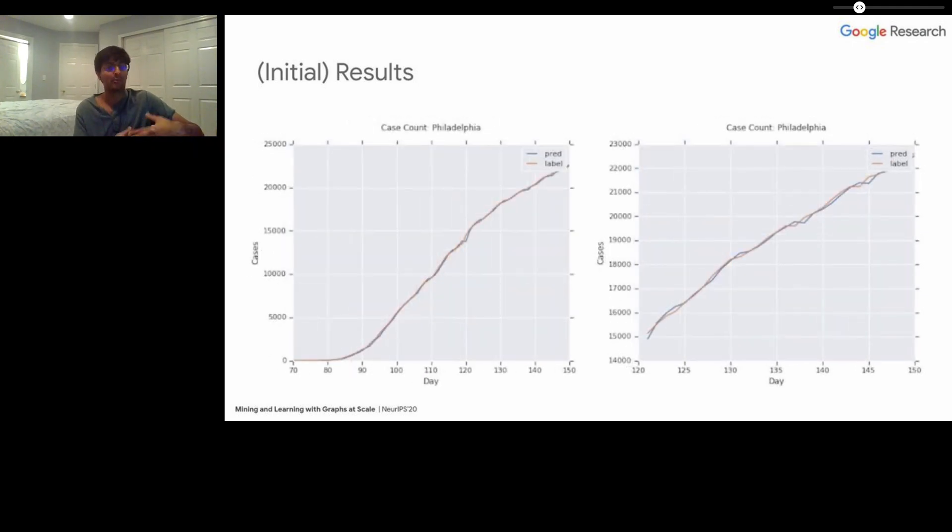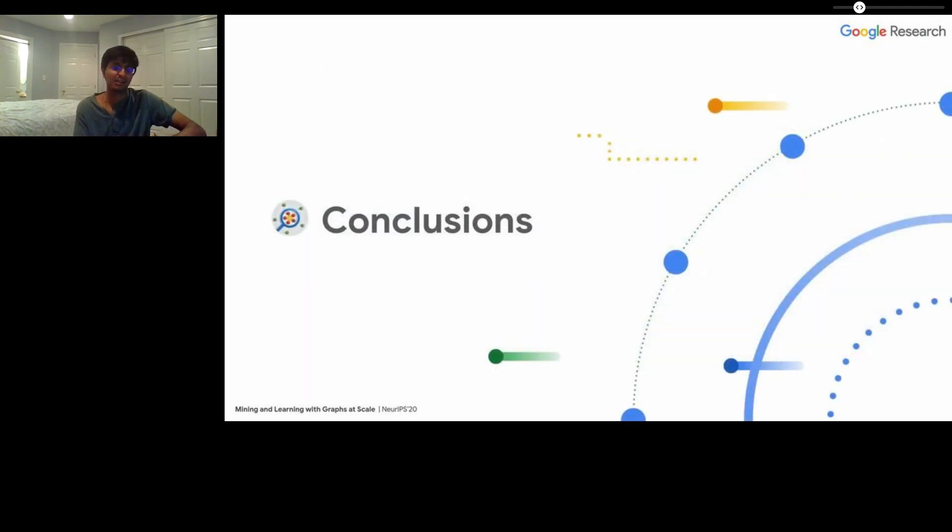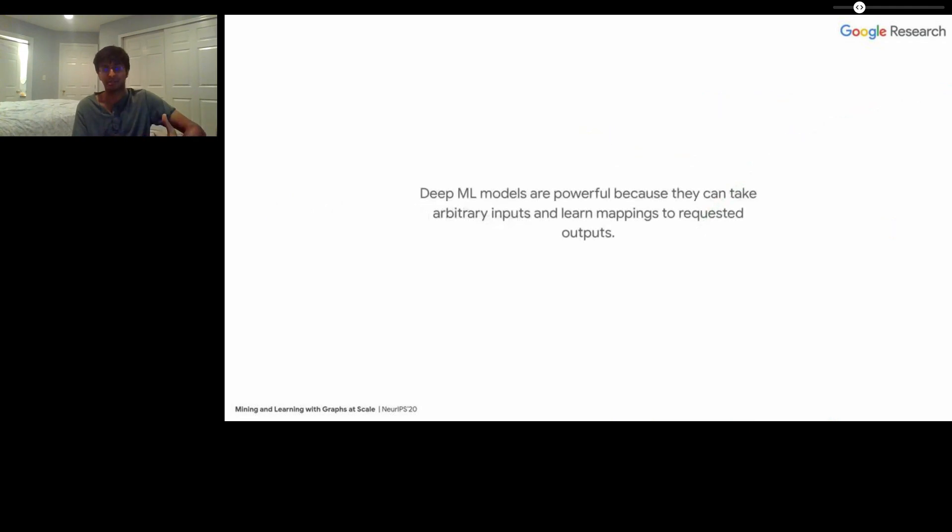I don't have a ton of time - I want to leave time for my other two speakers. Like I said, we'll be coming back to talk about GNNs later in the workshop, but hopefully you found this exciting and engaging. I want to leave with a few conclusions. First, deep ML models are powerful because they can take arbitrary inputs and learn mappings to requested outputs. This is why we think it's so great for epidemiology because epidemiology has so many factors that interact in so many weird ways, and deep ML models are really capable at extracting the insight from those features.